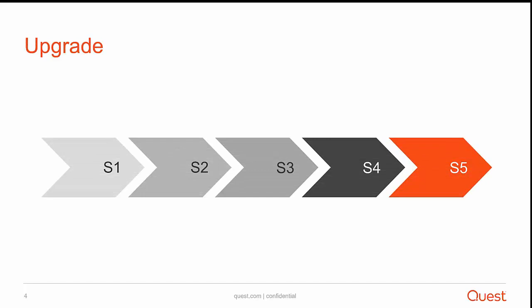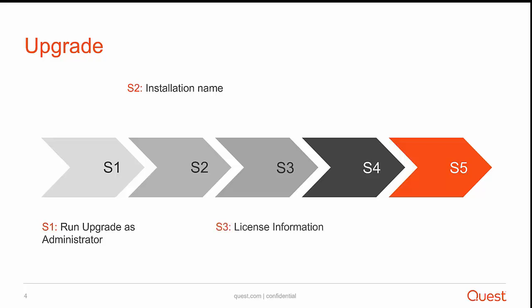The upgrade stage consists of five steps. Step number one, run the 7.1 script as administrator. Step number two, you will be asked for the installation name — we have already taken the snapshot of the installation name as part of the pre-upgrade task. Step number three, it will ask for the license, which we have already discussed. Then it will ask you to input the SQL configuration information, including the SQL server name on which your Change Auditor database is hosted, and the username and password credentials used to authenticate against your Change Auditor database.